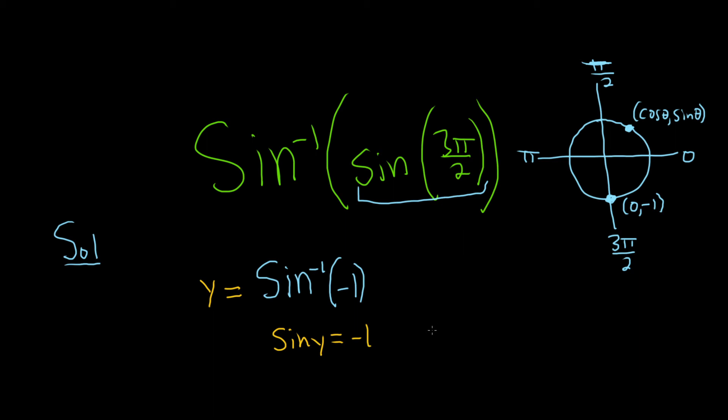Now let's specify where y is. Y equals the inverse sine, so y is in the range of inverse sine, which is going to be negative π over 2 to π over 2.